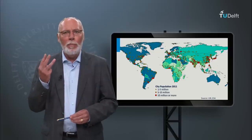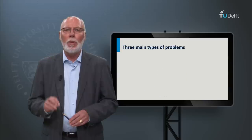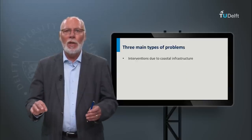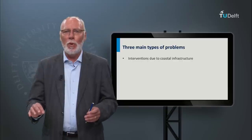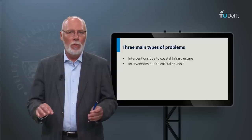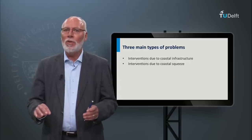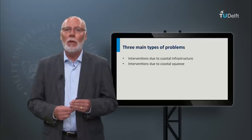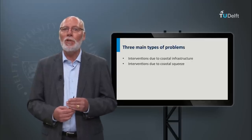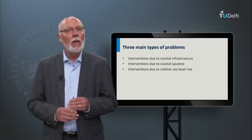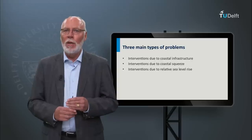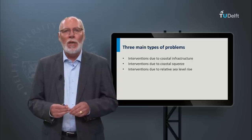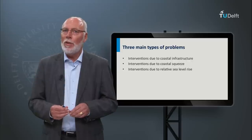We face three main types of problems. Problem 1: interventions due to coastal infrastructure that structurally interrupt the longshore transport. Problem 2: interventions due to coastal squeeze, providing too little space to accommodate temporary erosion due to extreme events. Problem 3: interventions due to relative sea level rise, causing a sediment shortage leading to coastline retreat.